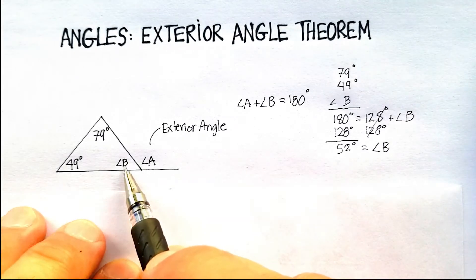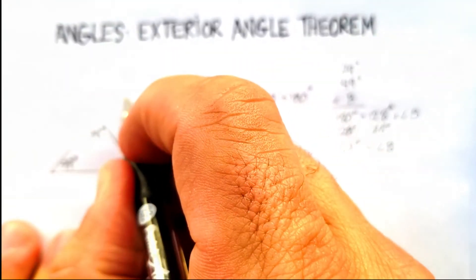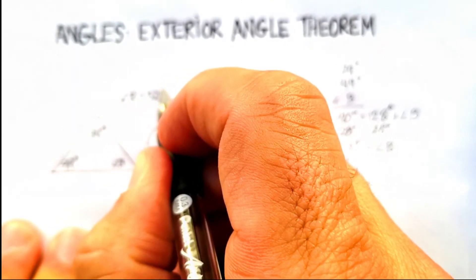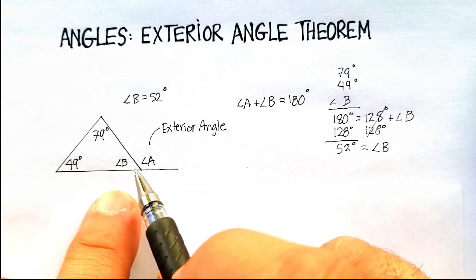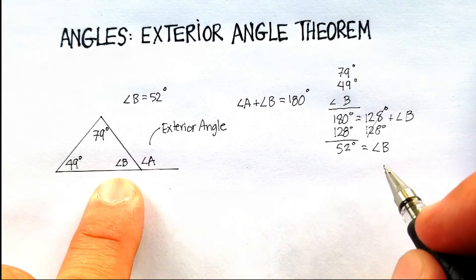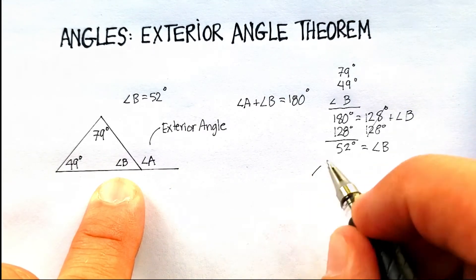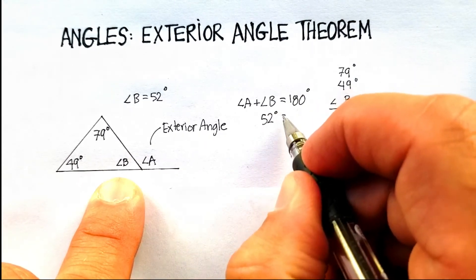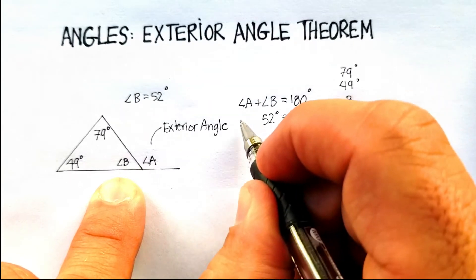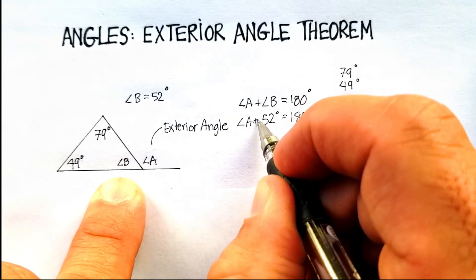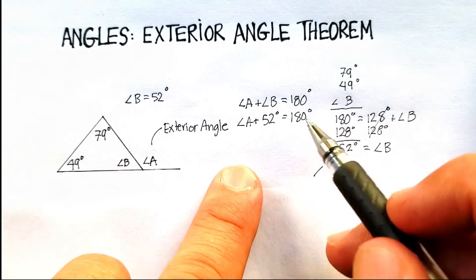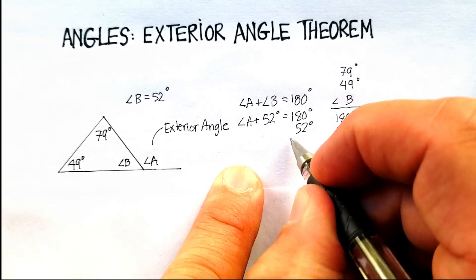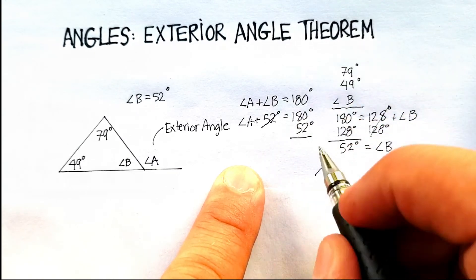So 52 should be equal to angle B. So we know that B is 52 degrees. So 52 plus angle A. Let's just substitute that up here. We'll be equal to 180. So we basically now let's subtract 52 from both sides. And look what we get. We get 128.